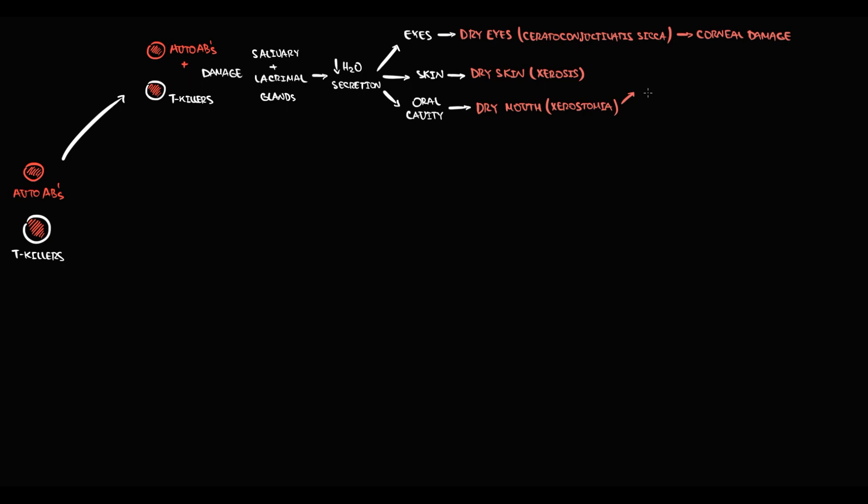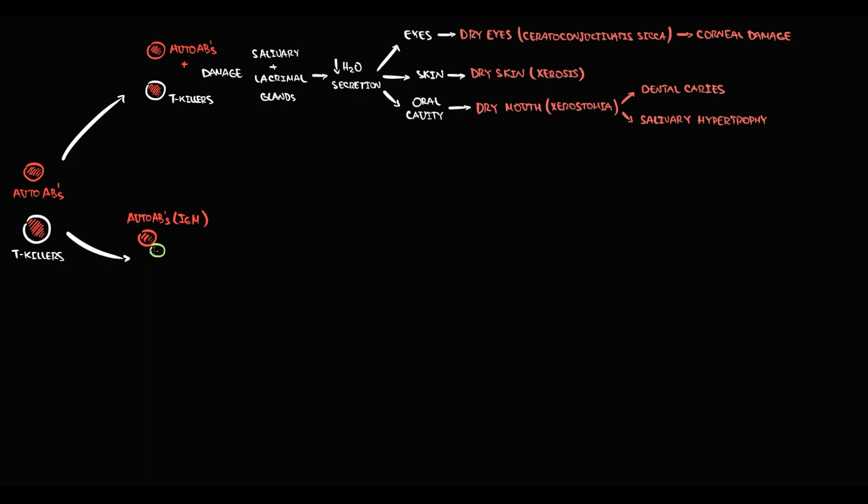Xerostomia significantly increases the risk of dental caries. Also, as a compensatory reaction, it causes hypertrophy of salivary glands. The problem with autoantibodies is that they have rheumatoid factor activity — immunoglobulin M antibodies can bind to the Fc portion of immunoglobulin G antibodies with formation of immune complexes.